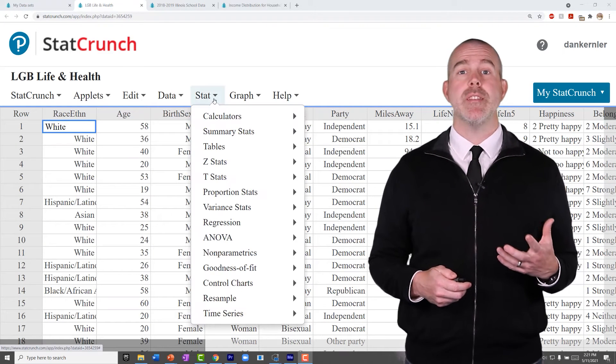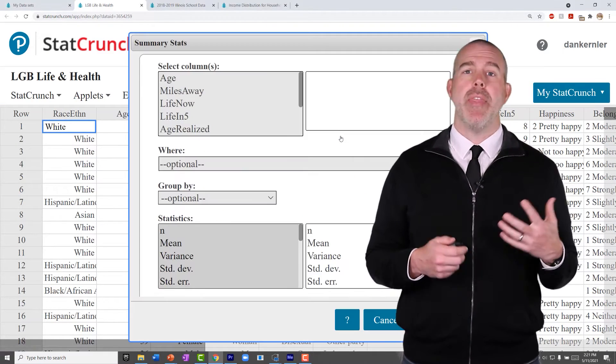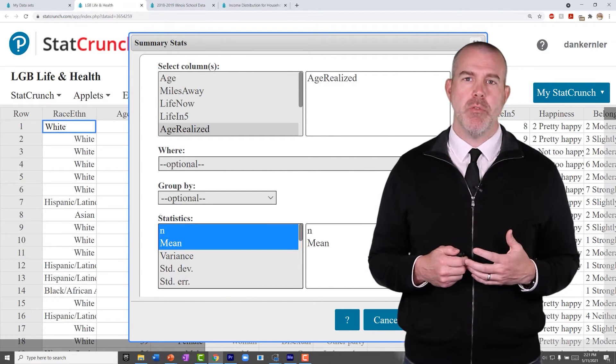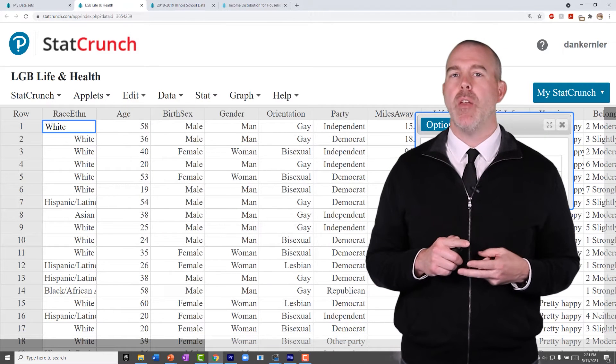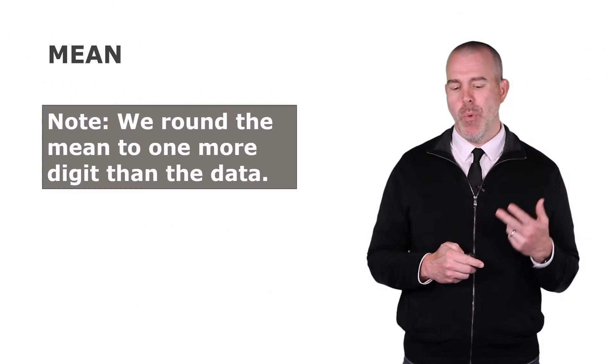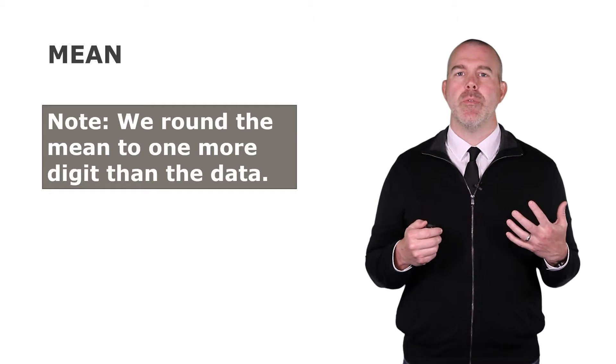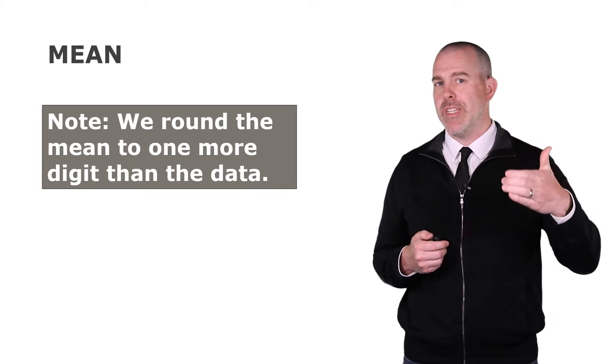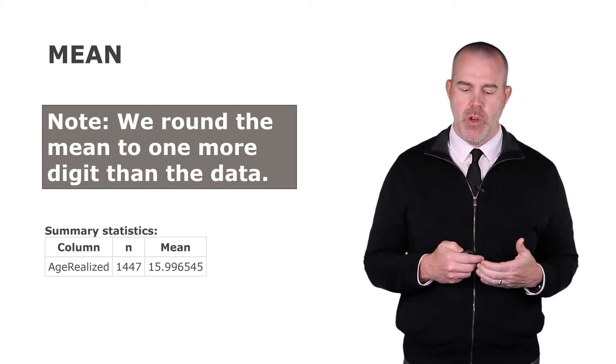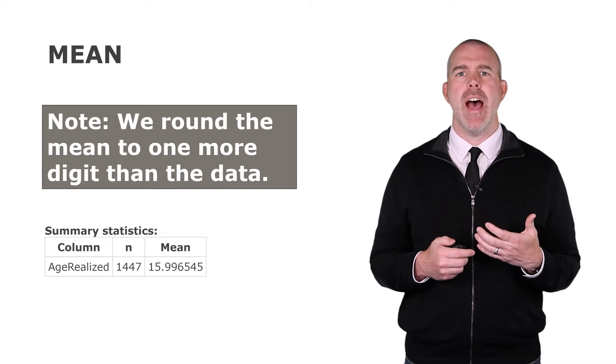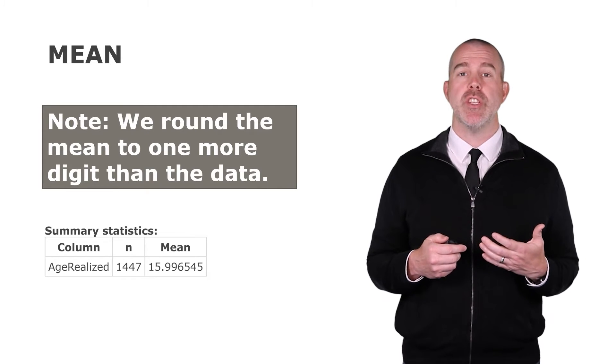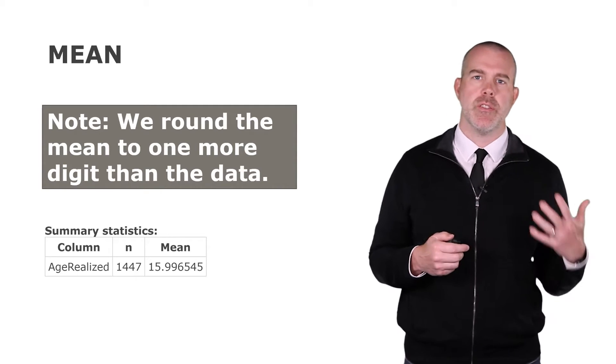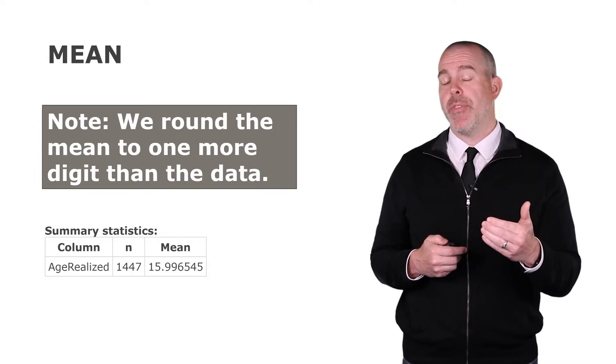This is pretty easy to do in StatCrunch. You just go stat, columns, and then pick your variable. And then down on the bottom, you can decide which statistics you want to compute. Let's give the sample size here, and then we can compute the mean. Now one note here, there's a bunch of decimal places we want to know where to round to. We always round the mean to one more digit than the data. These were given to us as ages, just to the nearest year. They didn't say 15.6 years. They gave 15 years, 20 years, 6 years, whatever.